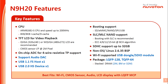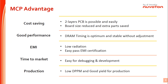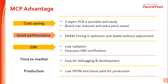N9H20 series provide a low-cost LQFP 128L or low-pin count TQFP 64L MCP package. They provide 2 MB, 8 MB, or 32 MB embedded DRAM for system design selection by customer demand. Nuvoton provides MCP which embeds the DRAM into the package. The MCP has the following advantages: 1. System cost reduction. 2. Performance is optimum. 3. Products can pass EMI easily. 4. System design effort can be shortened. 5. Good production yield.